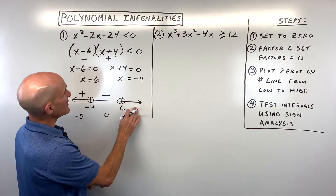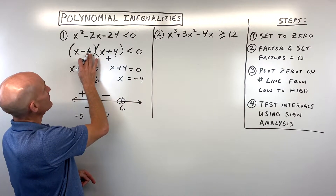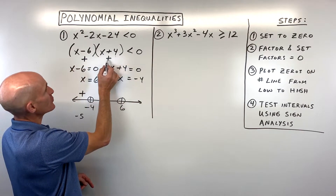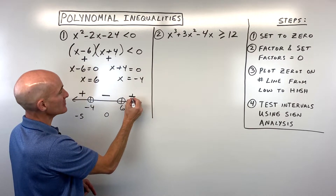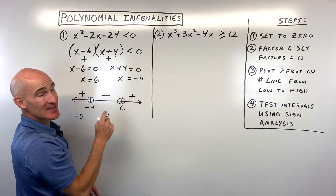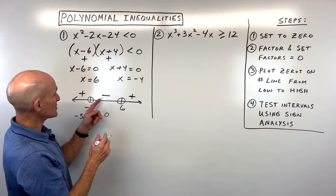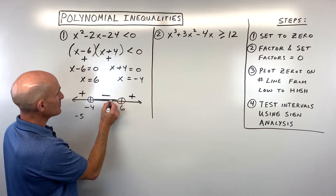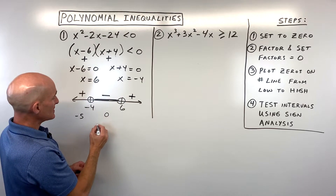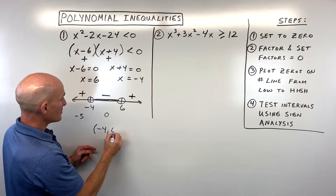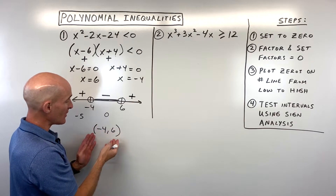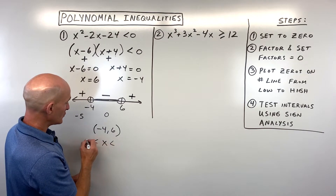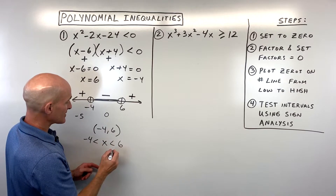Testing 7: 7 minus 6 is 1 (positive), and 7 plus 4 is 11 (positive). A positive times a positive is positive. We're looking for less than 0, meaning where it's negative — that's the middle interval. In interval notation: negative 4 to 6, not including either endpoint, so we use parentheses. Or in inequality notation: x is greater than negative 4 and less than 6.